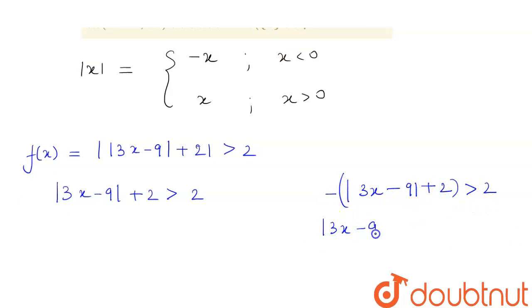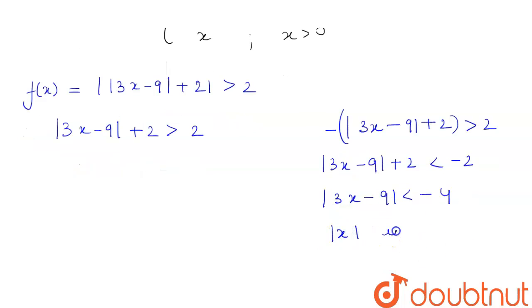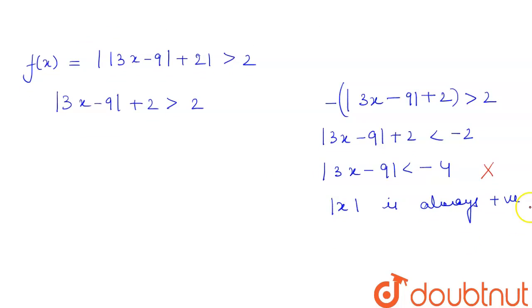We changed our inequality because whenever we multiply our inequality by -1, it gets changed. So we can write this as |3x - 9| < -4. But we know that |x| is always positive, so therefore this value is never possible. So we will move on to our first inequality.